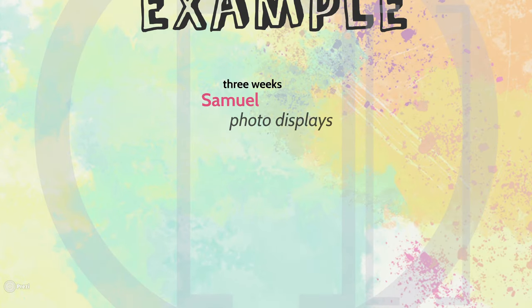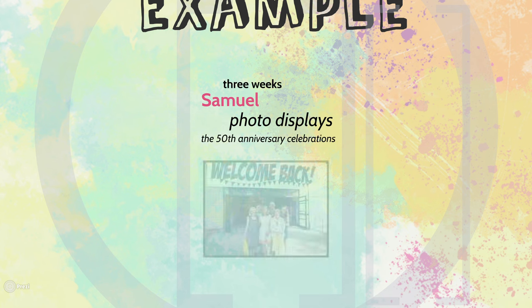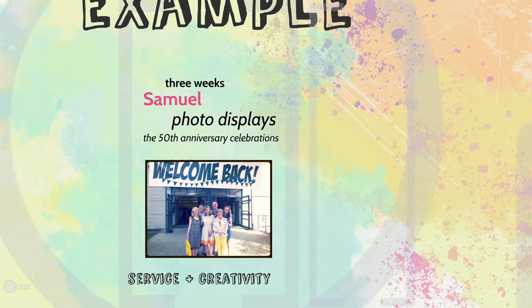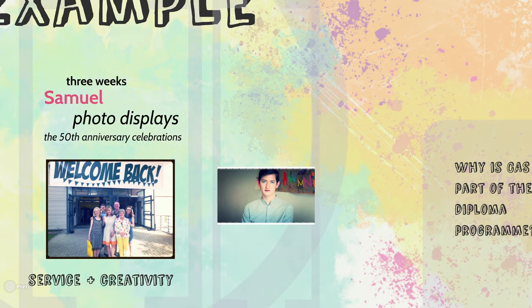For example, Samuel created photo displays for the 50th anniversary celebrations for a period of three weeks. This CAS project counted as creativity and service. His work was responding to an authentic need and served the St. John's community during the celebrations. To make the displays, he applied his skill in visual arts, and his work was exhibited for an audience.